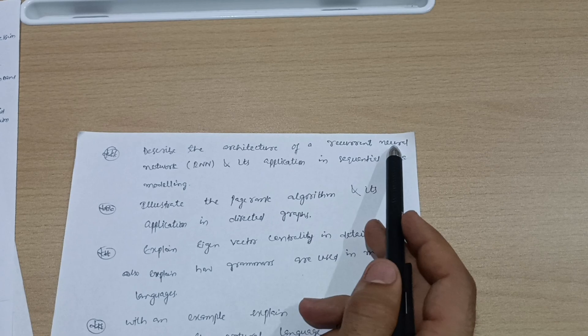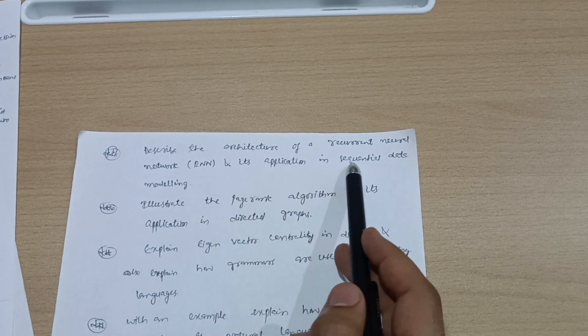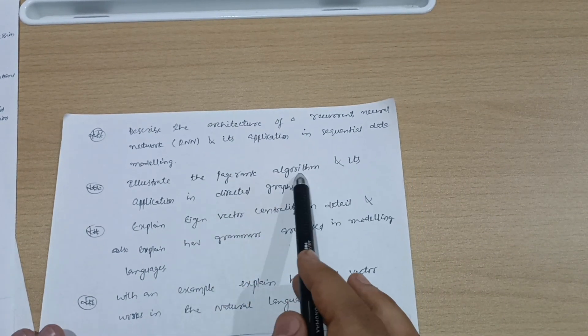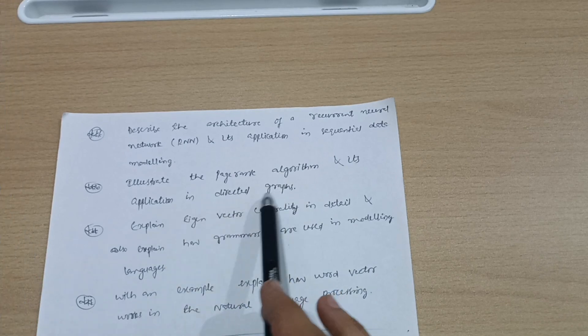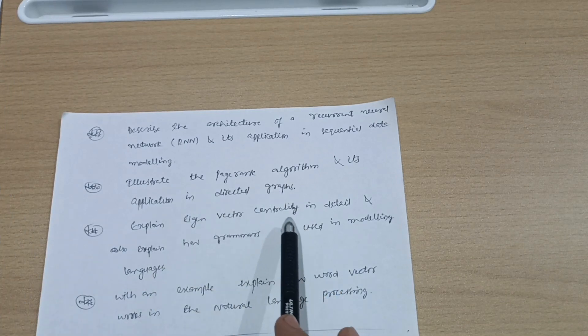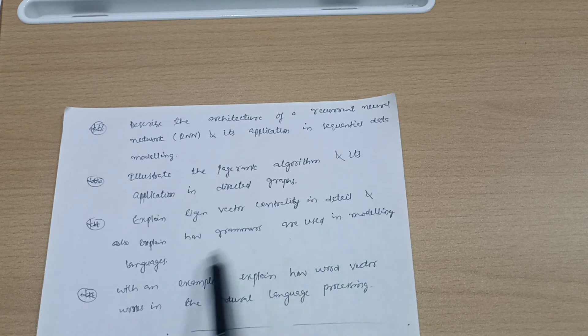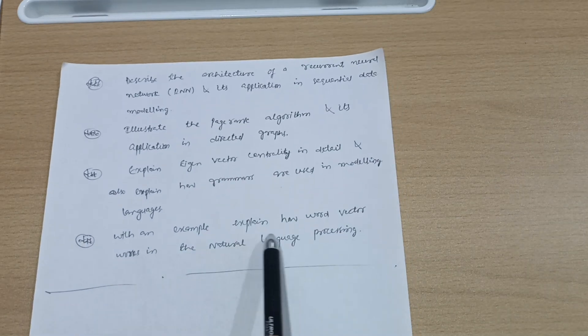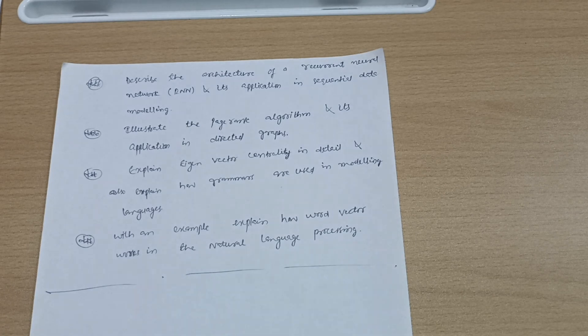Illustrate the PageRank algorithm and its application in directed graphs. Explain eigenvector centrality in detail and also explain how grammars are used in modeling languages. With an example, explain how word vectors work in neural language processing. These are all theoretical questions I have discussed in this video.